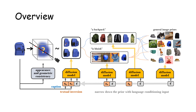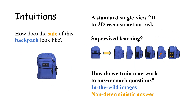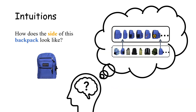Despite the difficulty of 2D to 3D mapping for computers, it is actually not a difficult task for human beings. Humans gain knowledge of the 3D world through daily observations and form a common sense of how things should look and should not look. Given a specific image, they can quickly narrow down their prior knowledge to the visual input. This makes humans good at solving ill-posed perception problems like single-view 3D reconstruction.